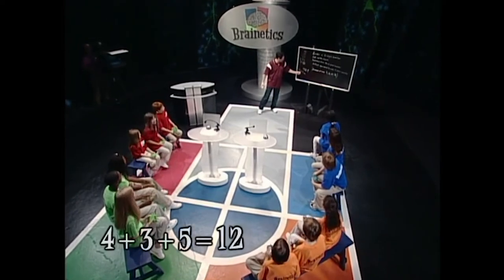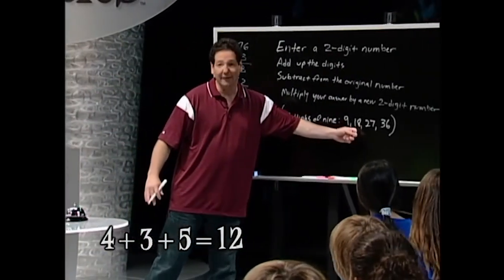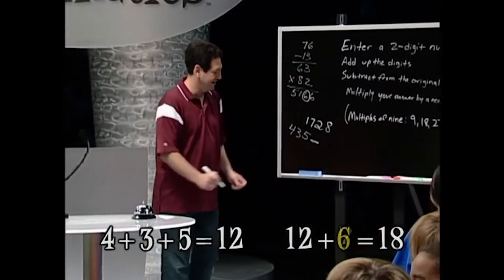The numbers added up to 12. 4 plus 3 is 7, plus 5 is 12. The next highest multiple of 9 after 12 is 18. So the missing number is a 6.